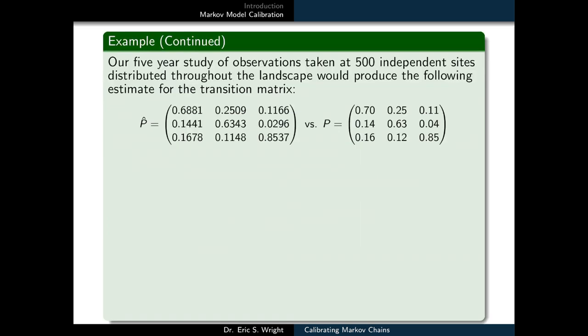Our five year study of observations taken at 500 independent sites distributed throughout the landscape would produce the following estimate for the transition matrix. As we can see, P hat contains values that are much closer to the true values that appeared in P.